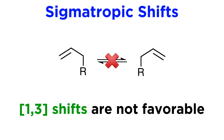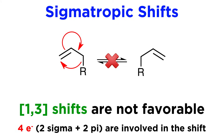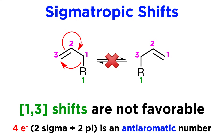To get a sense of what is not permitted in this context, take a look at an example of what would be considered a 1-3 shift. This would essentially entail the migration of this alkyl group over to the other terminal carbon in this allylic system, with two sigma and two pi electrons involved in the shift. Numbering the alkyl group one, and then one through three for the other fragment, we can see how it would be numbered this way. But four is an anti-aromatic number, so this is not a favorable process, and indeed a shift of this kind is rarely observed.